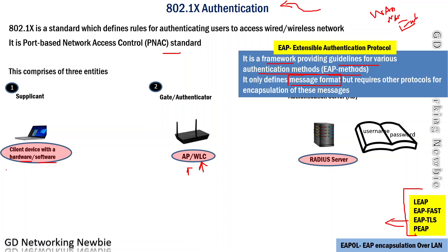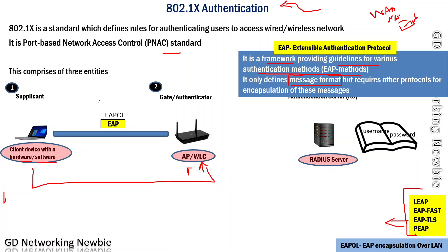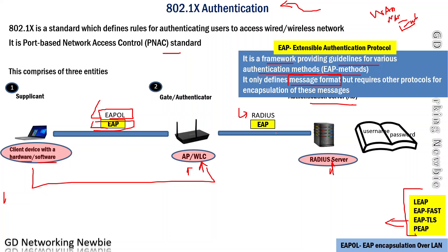We have the EAP messages and we want to encapsulate them. For EAP messages to be encapsulated from the supplicant to the authenticator, we use EAPOL — EAP over LAN — so EAP messages are carried within EAPOL. For the same EAP messages to travel from the authenticator to the authentication server, they are encapsulated using the RADIUS protocol.